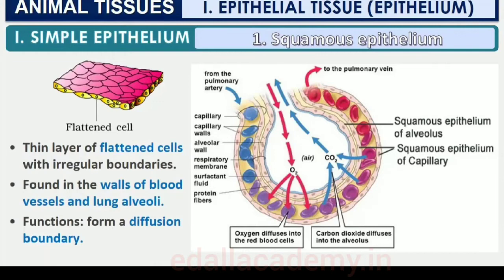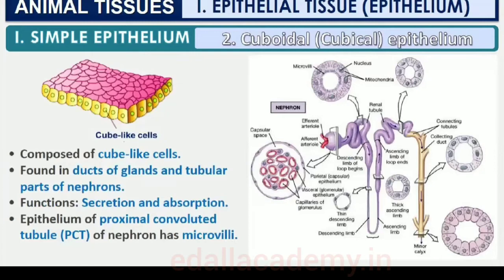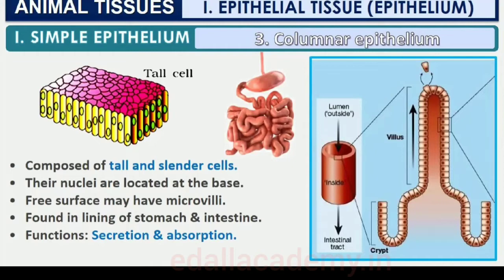The cuboidal epithelium is composed of a single layer of cube-like cells. This is commonly found in ducts of glands and tubular parts of nephrons in kidneys, and its main functions are secretion and absorption. The epithelium of proximal convoluted tubule (PCT) of nephron in the kidney has microvilli. The columnar epithelium is composed of a single layer of tall and slender cells. Their nuclei are located at the base and the free surface may have microvilli. They are found in the lining of stomach and intestine and help in secretion and absorption.